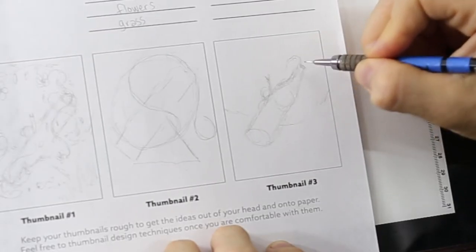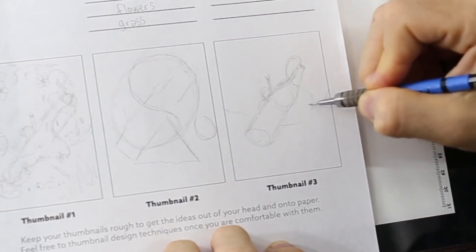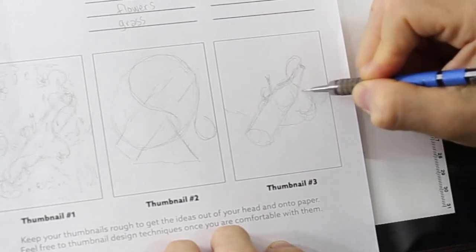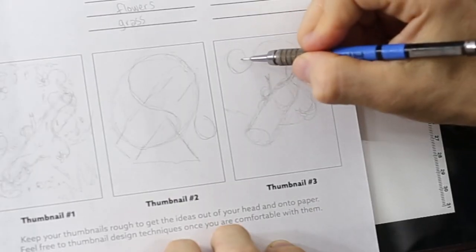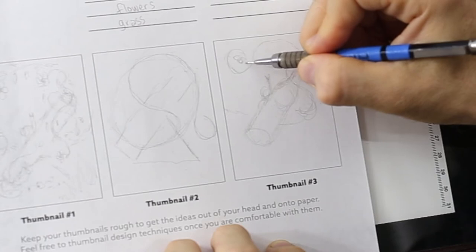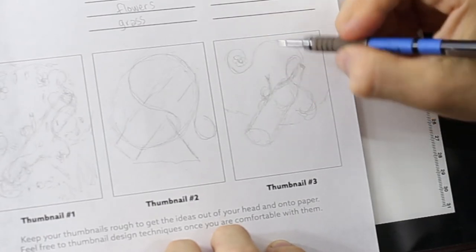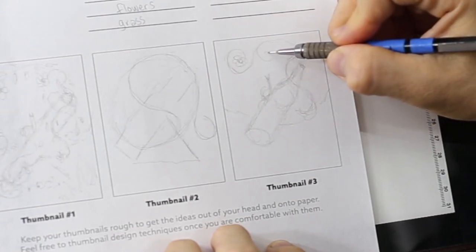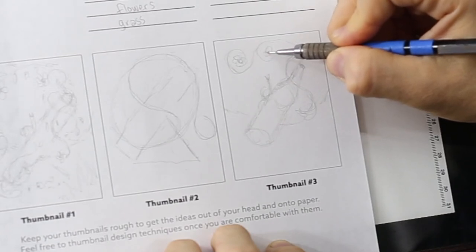We'll have vines coming out of there same as last sketch. Maybe we want them curving a little differently. Put the flower here, maybe another flower here.